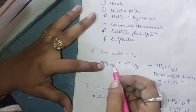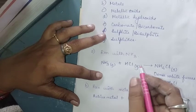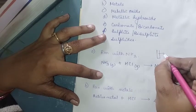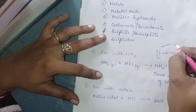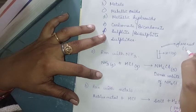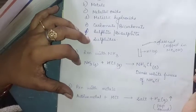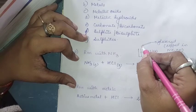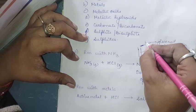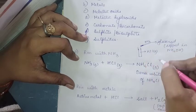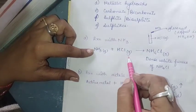The first reaction of hydrogen chloride gas is with ammonia. This is also the confirmatory test to confirm that a given gas is HCl. We take a test tube filled with HCl gas, then take a glass rod dipped in ammonium hydroxide solution, and bring this glass rod near to the mouth of the test tube. Ammonia and hydrogen chloride will react.